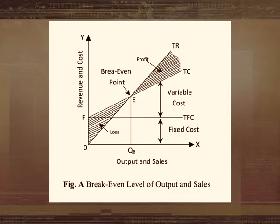Linear break-even analysis by graphic method. Break-even analysis is based on revenue functions and cost functions. Figure A graphically shows a typical linear break-even analysis chart. When the price of the product remains constant as the firm expands its production and sales, the total revenue will be linearly related to output. Therefore, the total revenue function TR in Figure A represents the total revenue that the firm will earn at each level of output, assuming that price P remains constant.